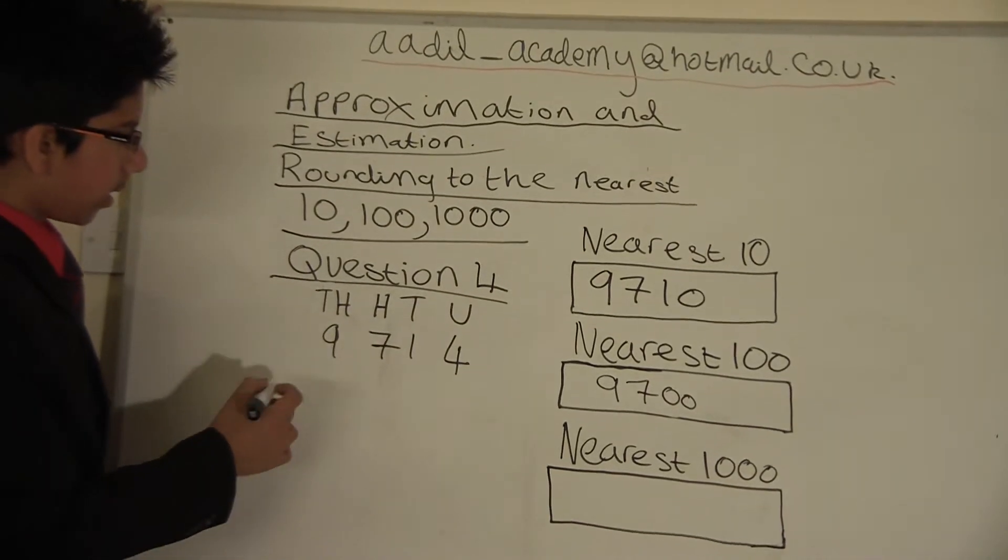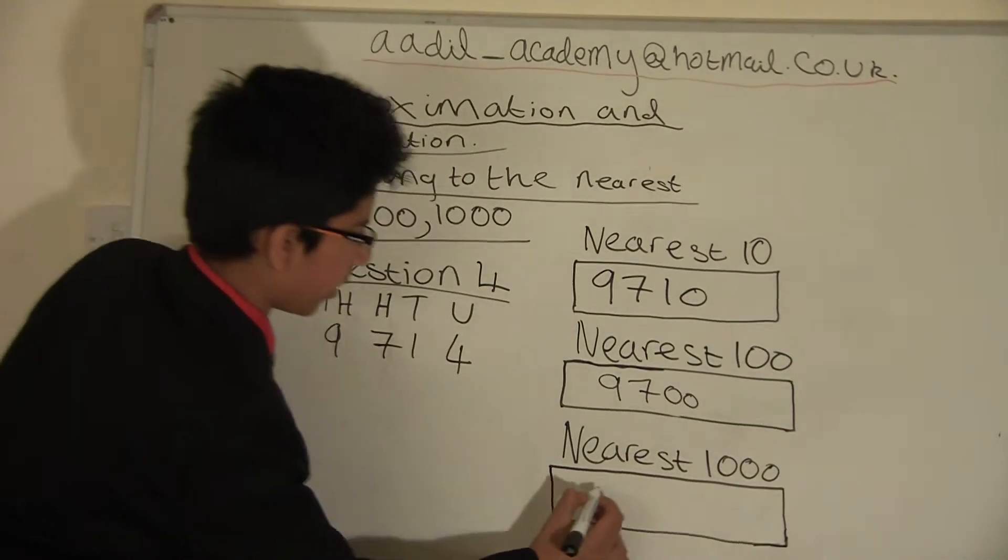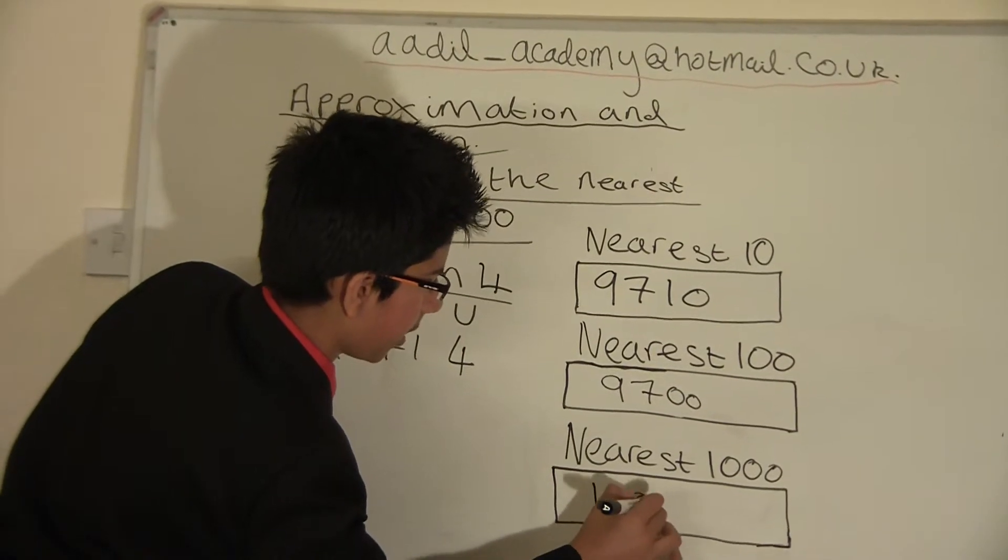Because it's 7, so we'll get 10,000 when we round up.